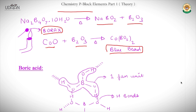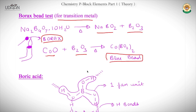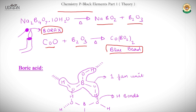Now move to the next important Boron structure: Boric Acid. The structure of boric acid contains B(OH)₃ units arranged in a layer structure, which is also called a fan-like unit because it looks like a fan. It is stabilized by hydrogen bonding between oxygen and hydrogen. One important point: per one molecule of boric acid, six hydrogen bonds are formed.